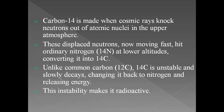Now, how does carbon-14 form in the atmosphere? We know C-12 is the most common isotope of carbon and is the most highly available carbon form. But carbon-14 is also present in the atmosphere. It forms when cosmic rays fall on the atmosphere — cosmic rays coming from the sun and distant stars produce carbon-14 in the atmosphere in addition to carbon-12.